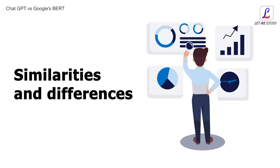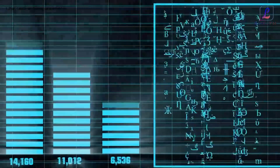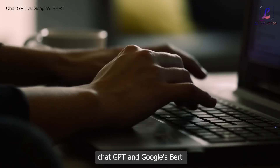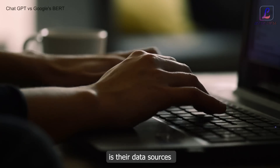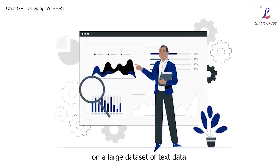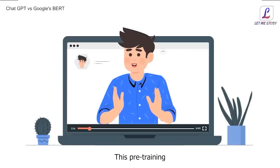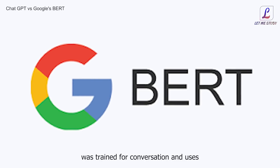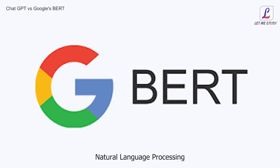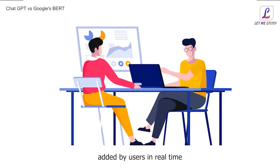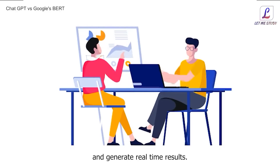Regarding data sources, one of the main differences between ChatGPT and Google's BERT is that ChatGPT was trained using generative pre-training — it was pre-trained on a large dataset of text data, which allows the model to generate a large volume of text in various styles and tones. In contrast, Google's BERT was trained for conversation and uses natural language processing, which enables it to understand natural language queries in real-time and generate real-time results.